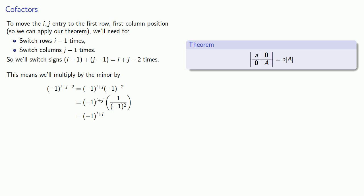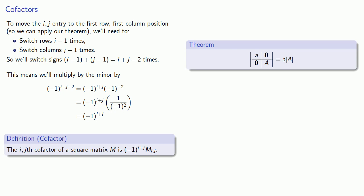And this leads to the following definition: the ijth cofactor of a square matrix M is negative 1 to power i plus j times the minor of ij.